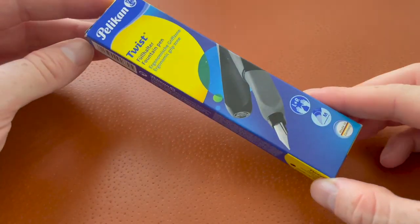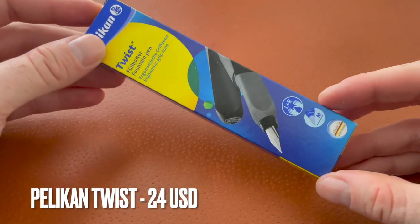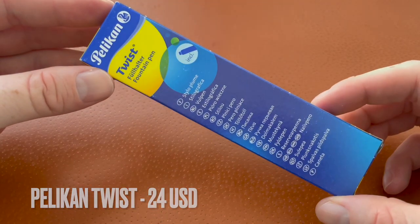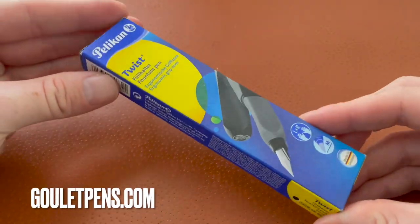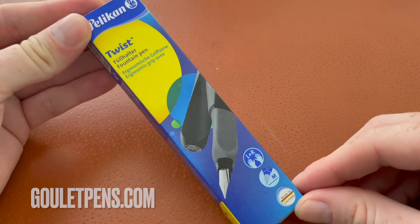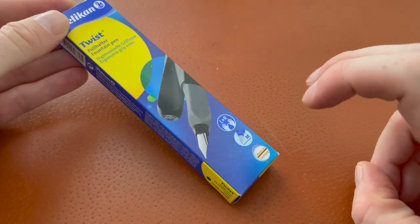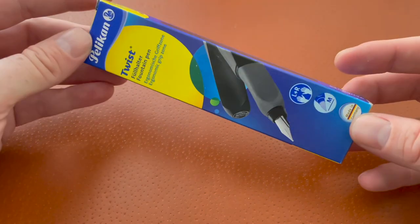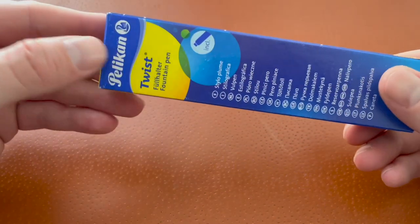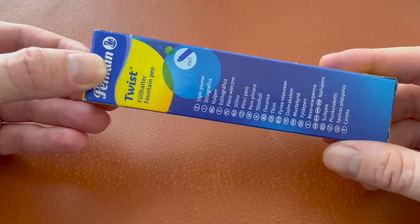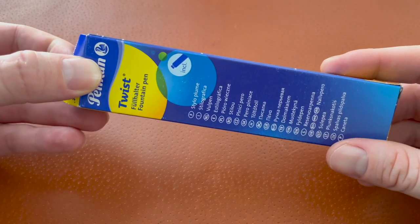Today we are talking about the Pelikan Twist fountain pen which is an entry-level model from Pelikan. This pen I believe is intended for kids so they can learn how to hold the pen the correct way. There is no real correct way of holding a pen, it's whatever is the most comfortable to you. The pen comes with a long international ink cartridge.